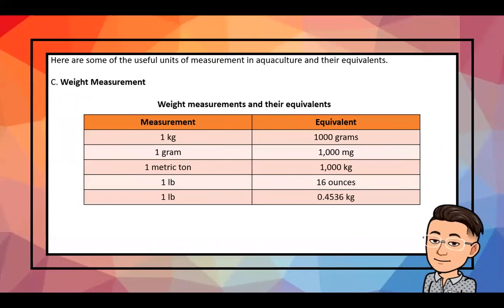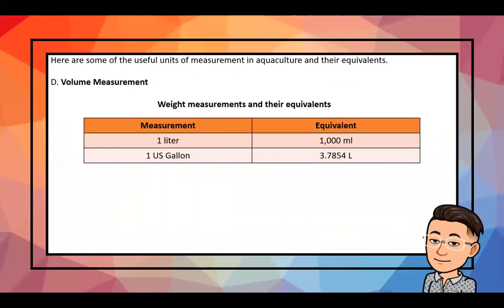For weight measurements: 1 kilogram = 1,000 grams; 1 gram = 1,000 milligrams; 1 metric ton = 1,000 kilograms; 1 pound = 16 ounces; and 1 pound = 0.4536 kilograms. For volume measurements: 1 liter = 1,000 milliliters; and 1 US gallon = 3.7854 liters.